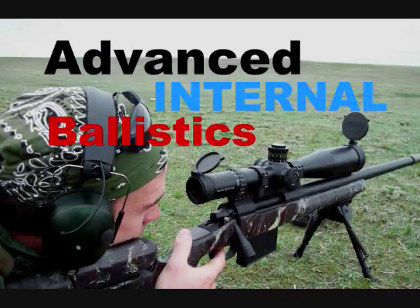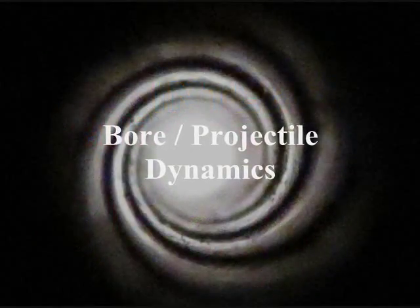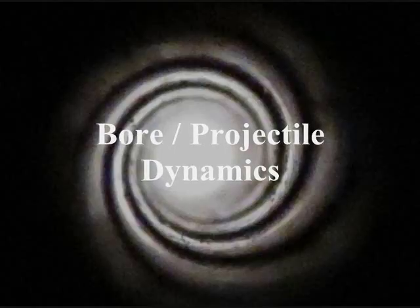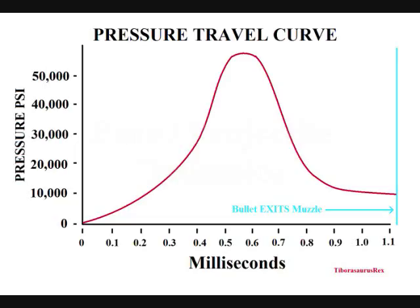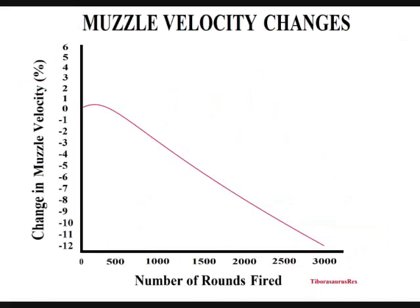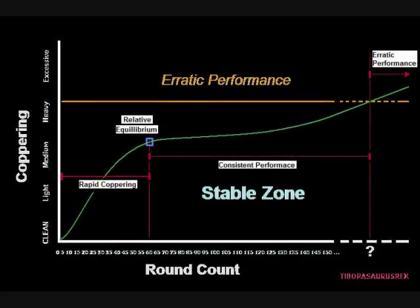We're still talking about advanced internal ballistics, discussing bore axis shifts due to harmonic and vibratory inconsistencies. Within that subcategory, we're covering bore and projectile dynamics and how the relationships between the bore and the projectile can affect your point of impact and muzzle velocity. This video is going to discuss something very important for long-range precision shooters: cleaning. We just finished videos on coppering and propellant residue, so you may want to watch those first.